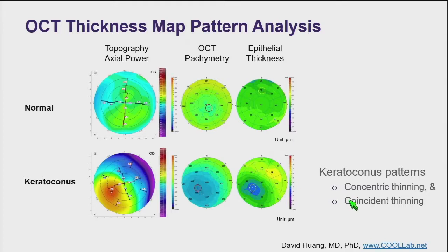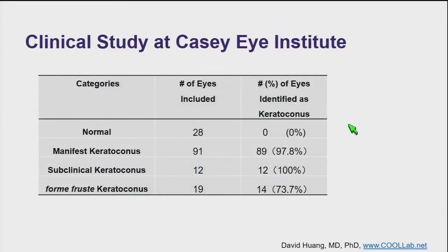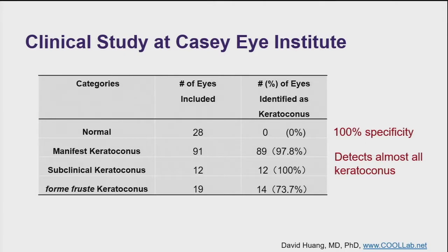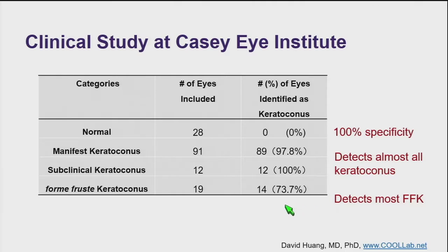With these two signs, you can accurately diagnose keratoconus. We tested this out with a clinical study at the KCI Institute with a moderate group, and found that this provides 100% specificity and detects almost all keratoconus, including all 12 cases of subclinical keratoconus that are topographically abnormal but see 20/20 or better. It also detects most forme fruste keratoconus — 74% — defined as the fellow eye that is topographically normal but has a fellow eye with keratoconus.